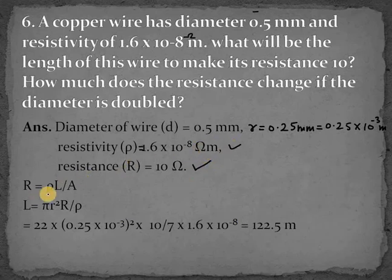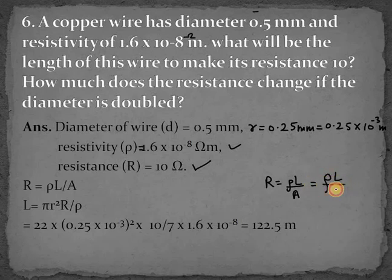Now we know the formula for R, that is ρL over A, area of cross section. Now you can put the value of area as πr². So now we know the value for ρ, we know the value for π, we know the value for r² and big resistance R, so we can easily find the value for L.